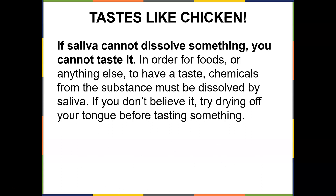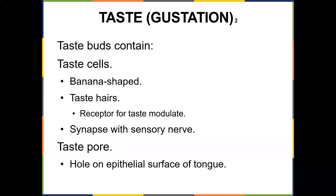If saliva cannot dissolve something, you can't taste it. In order for foods to have a taste, chemicals from the substance must be dissolved by saliva — try drying off your tongue before tasting something. Saliva breaks down amylase. Taste buds contain taste cells, which are banana-shaped with little taste hairs — a receptor for taste modulation — that synapse with sensory nerves through taste pores.